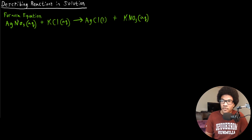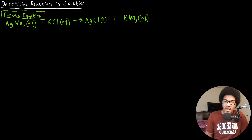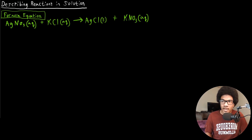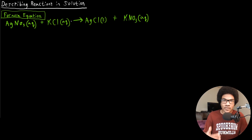This is the formula equation, and the only drawback is that it's really general — it doesn't tell you what's going on in solution. We know that all of these are strong electrolytes, and so they would actually be dissociated into hydrated ions in solution.